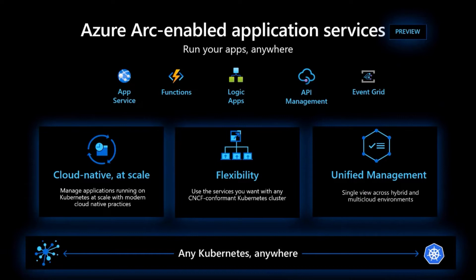This is a very cool scenario for building and architecting applications because you usually want to take advantage of PaaS services. Until we had Azure Arc, you were basically limited to running PaaS services in Azure. But if the application also needs to run on-premises or at other cloud providers, you had two options: different architectures for each environment, or one architecture using only VMs or containers without higher-level PaaS services. Now with Azure Arc, you can architect your solution on PaaS services and run them not just in Azure but really anywhere.